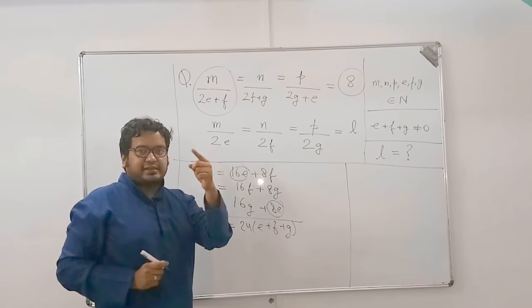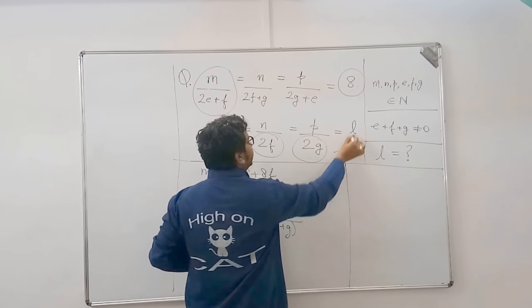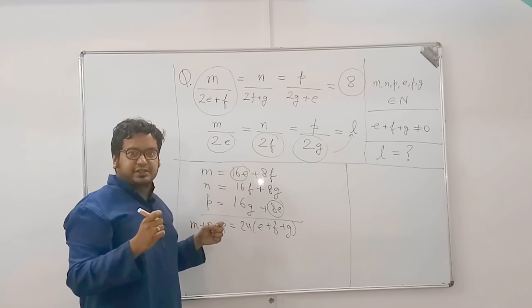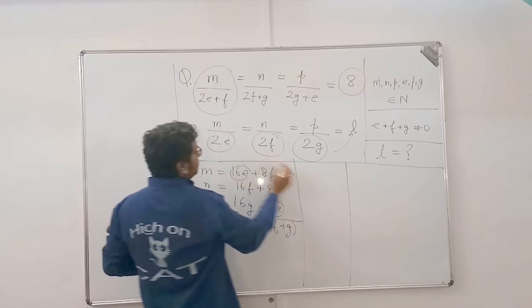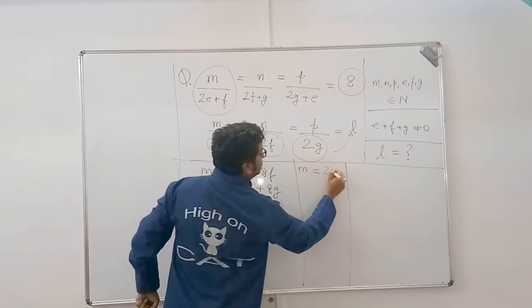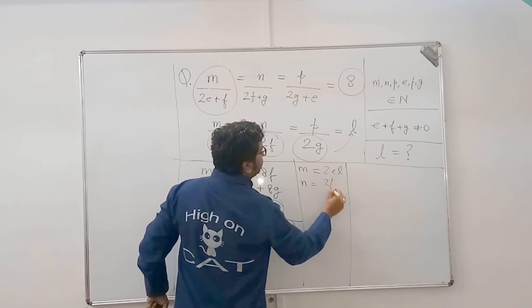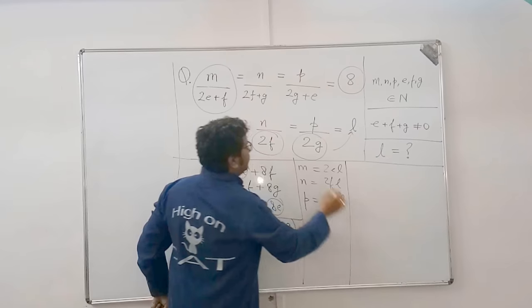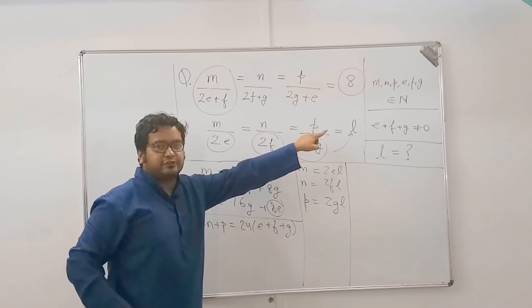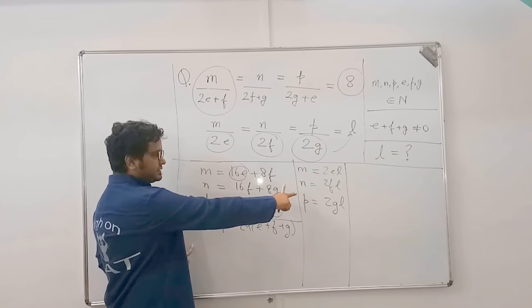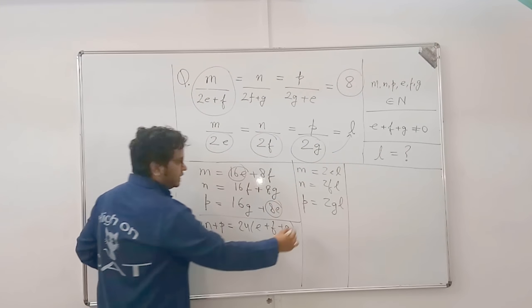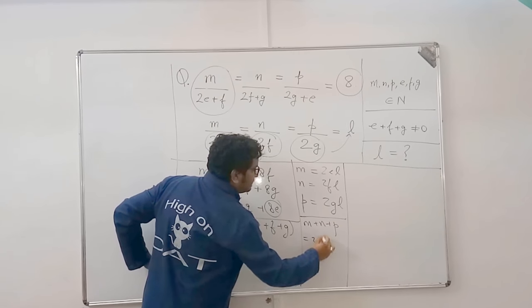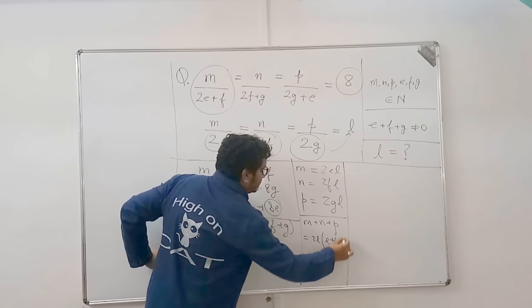Next one. Now, if I take these to the right-hand side here again, you will again get something like e, f and g. I can again find e plus f plus g. So, from the second equation, what is m? m is equal to 2e into l. n is equal to 2fl. And p is equal to 2gl. That's how you find m plus n plus p. So, what is this equal to from the second equation? If you add here, m plus n plus p is equal to 2l times e plus f plus g. Got it?